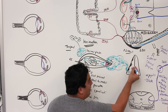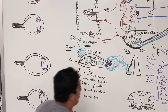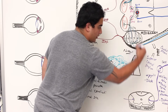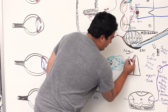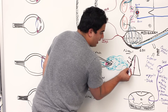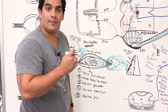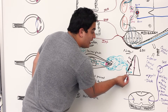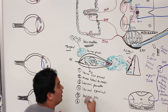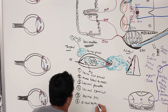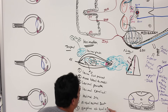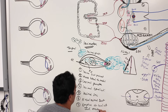The nasolacrimal duct empties into the nasal cavity at the level of the inferior meatus. The nasal cavity landmarks include the superior, middle, and inferior nasal conchae (turbinates), with corresponding meatuses in between. Lacrimal fluid drains specifically into the inferior meatus.